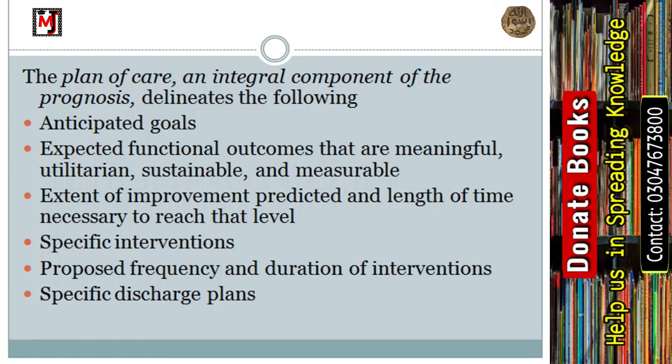We have to give specific interventions — such as strengthening, isometrics, and resistance exercises. When designing the interventions, you have to specify the frequency and duration, for example two or three times per session, for 10 or 20 minutes. Once all this is achieved and outcomes are checked, you have to give specific discharge plans — such as a follow-up call after a month or a home-based exercise program — so you design the plan of care with specific discharge plans.